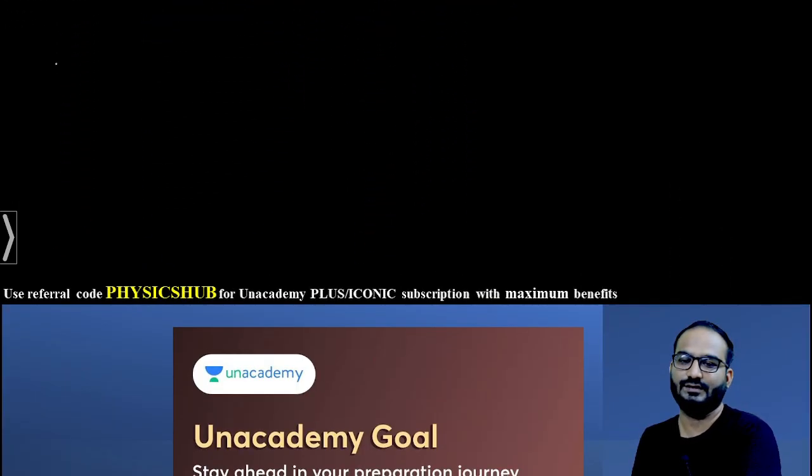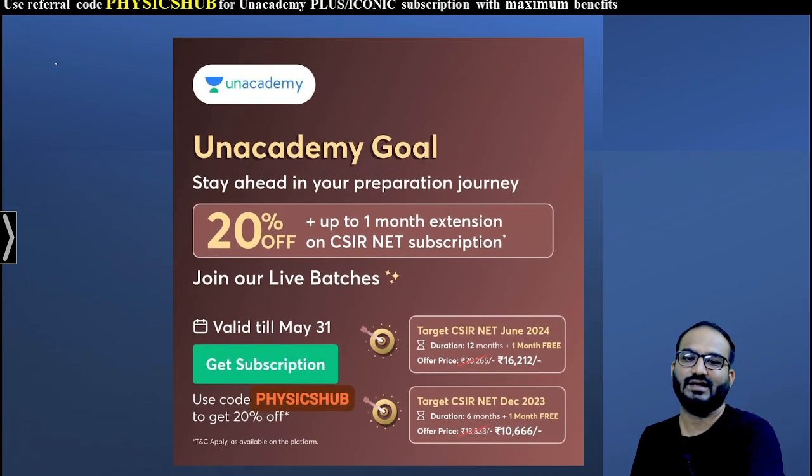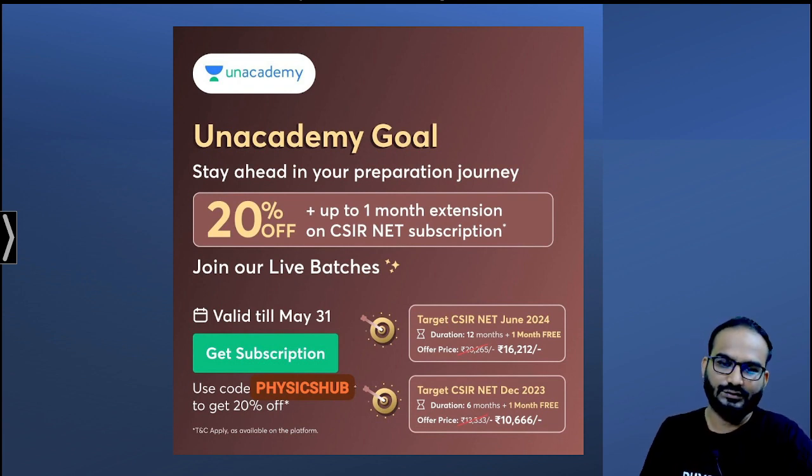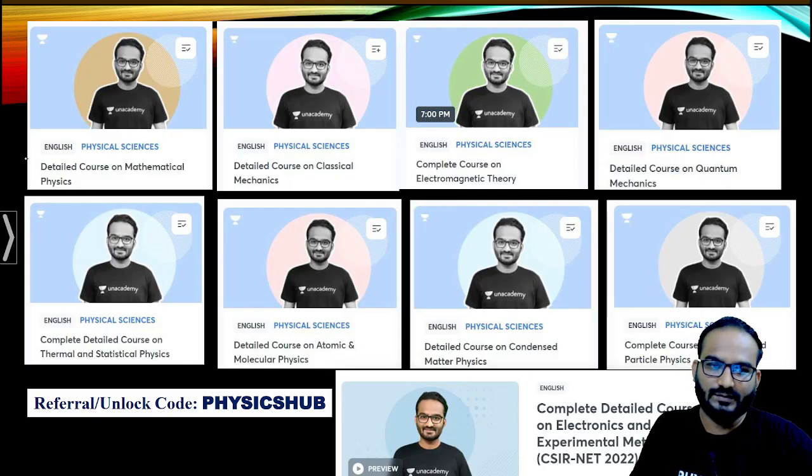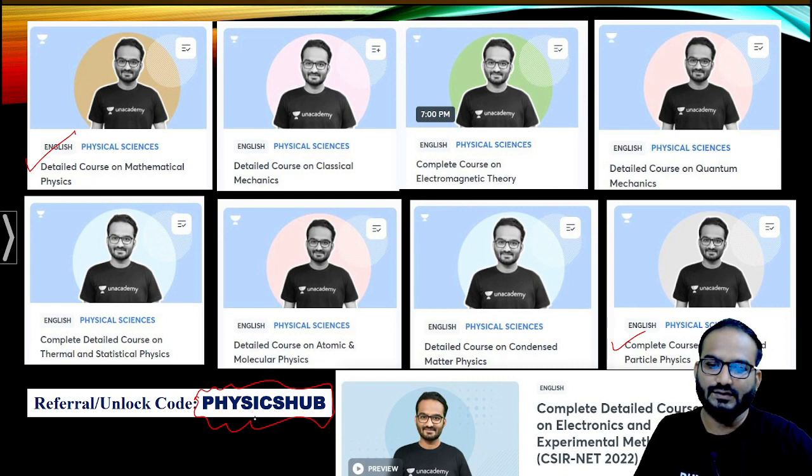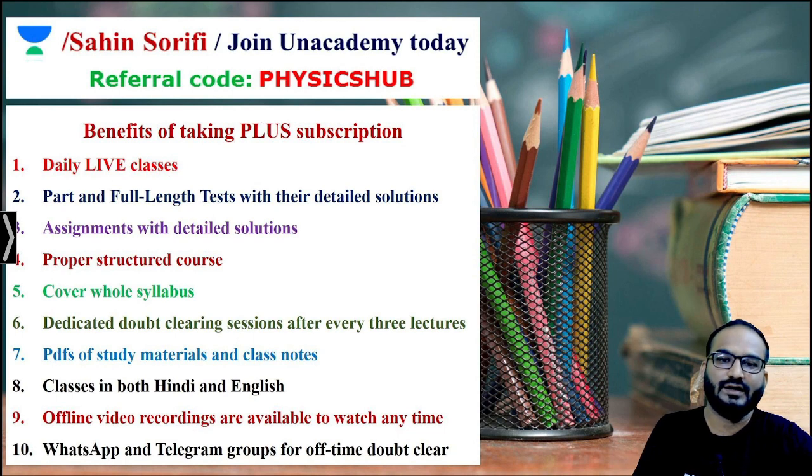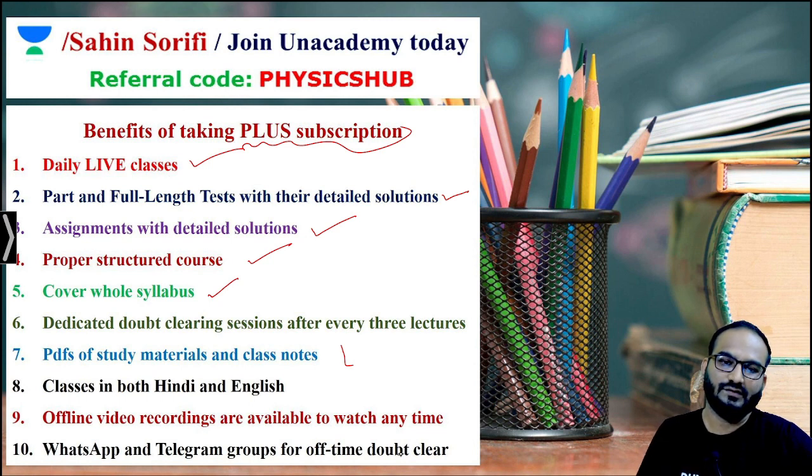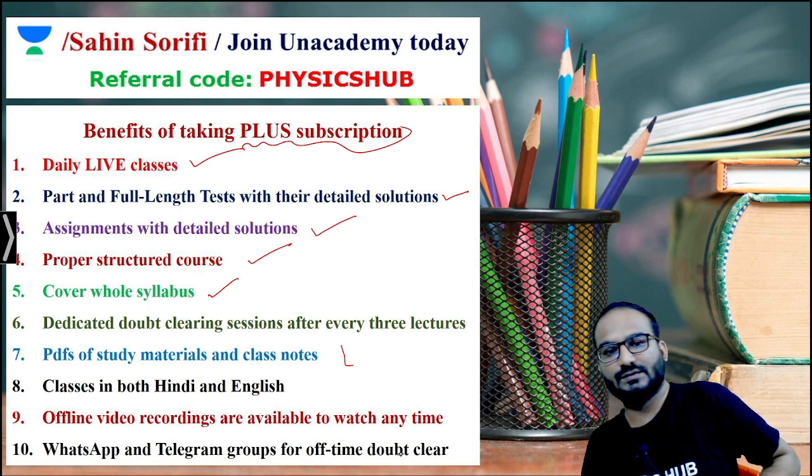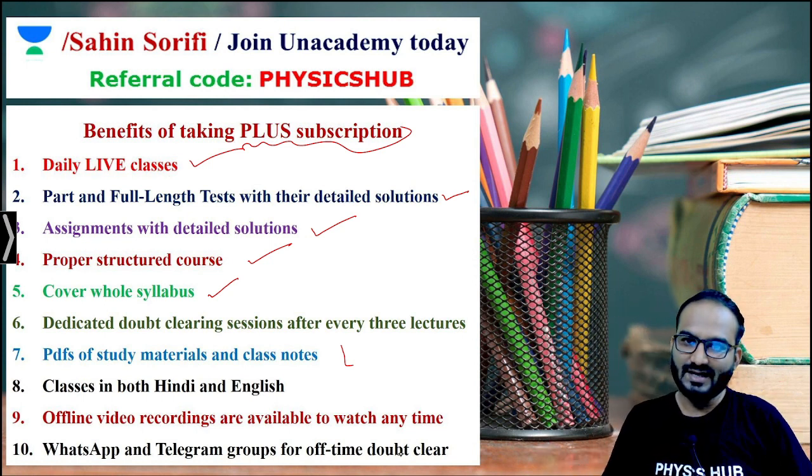Before ending this video, let me tell you that Unacademy's goal is to help you stay ahead in your preparation journey. You can utilize this referral code PHYSICSHUB to get the maximum benefits. This offer is expiring today, May 31st. You can target for June 2024 or December 2023. This is my profile on Unacademy. You can follow my courses. All nine units are covered from mathematical methods to nuclear particle physics. Benefits include daily live classes, part-length and full-length tests with detailed solutions, assignments with detailed solutions, proper structured course covering the whole syllabus. Thank you very much for watching this video. Please give it a thumbs up and subscribe to the channel.